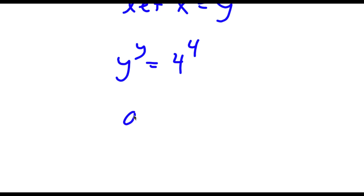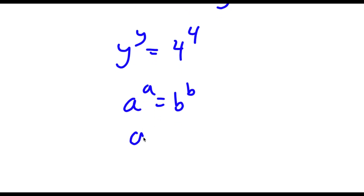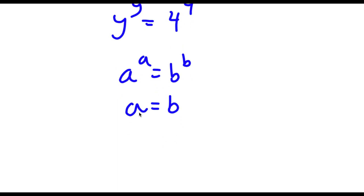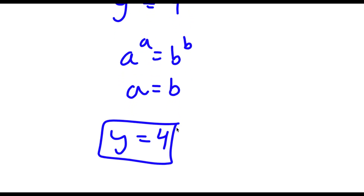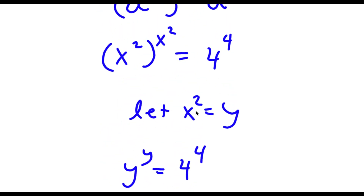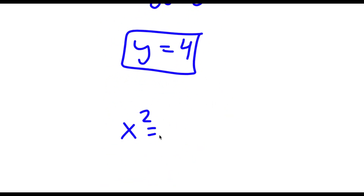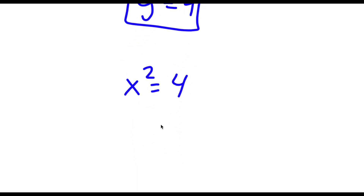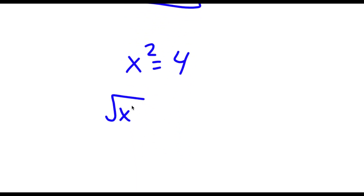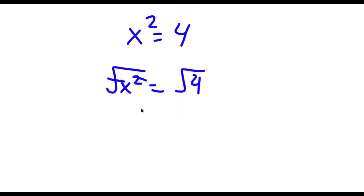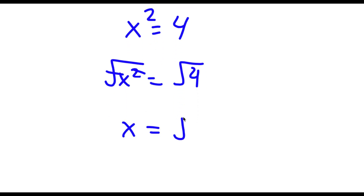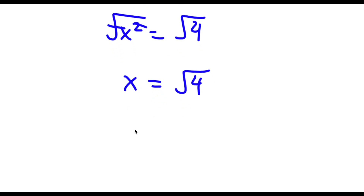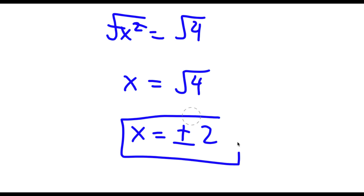If a to the power of a is equal to b to the power of b, this means a equals b. So y is equal to 4. Remember we set x to the power of 2 equal y, so x to the power of 2 is equal to 4. Taking the square root on both sides, I'm left with x is equal to the square root of 4. The square root of 4 has two solutions: positive or negative 2. So these are my two solutions.